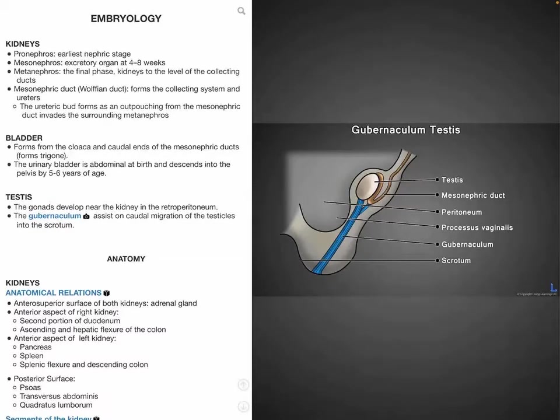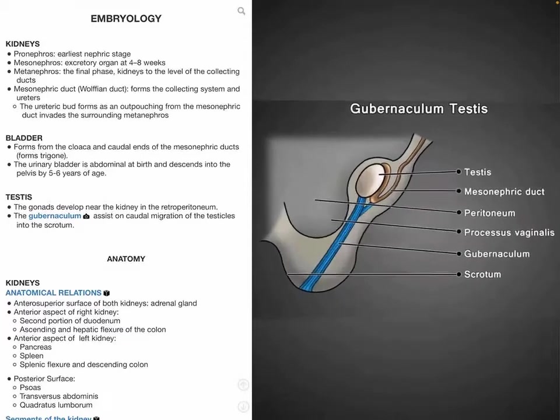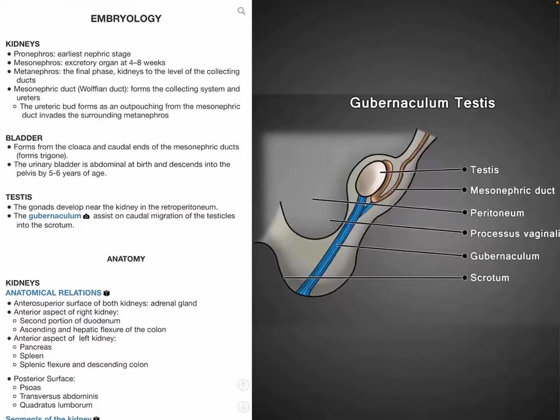Although the testes originally formed near the kidneys, a band of fibrous tissue known as the gubernaculum, which can be seen as the blue structure highlighted in the picture on the right, helps the testes migrate into and anchors them into the scrotum.